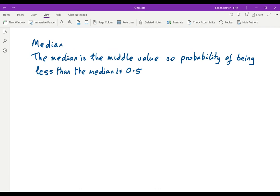Now let's see how we can find the median. The median is the middle value, so the probability of being less than the median is a half, or 0.5.